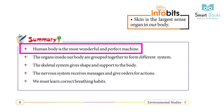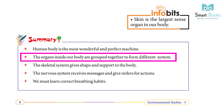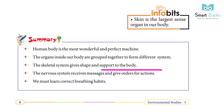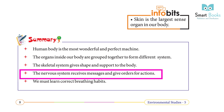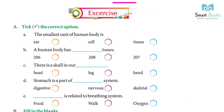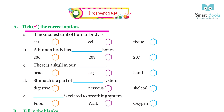Summary: The human body is the most wonderful and perfect machine. The organs inside our body are grouped together to form different systems. The skeletal system gives shape and support to the body. The nervous system receives messages and gives orders for action. We must learn correct breathing habits.